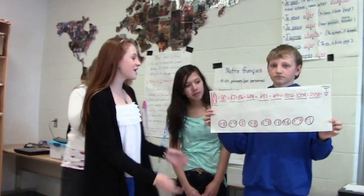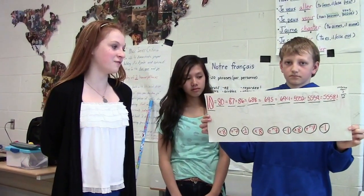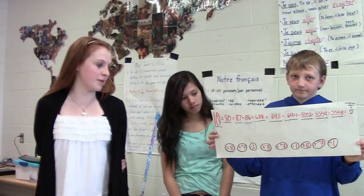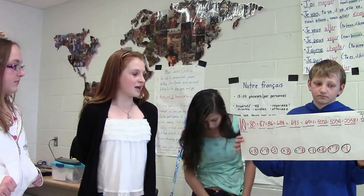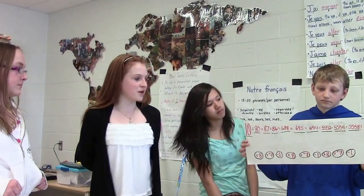Alright, and group 3. This is our math pattern. It goes 10, 80, 87, 86, 688, 695, and 694. We got this by multiplying by 8, adding 7, and subtracting 1 — times by 8, adding 7, and subtracting 1.